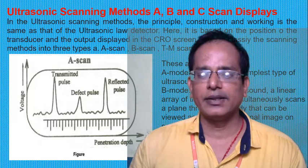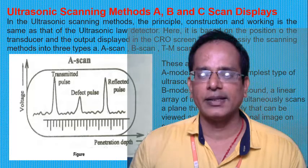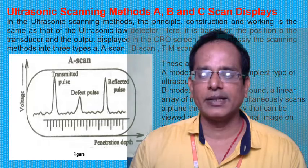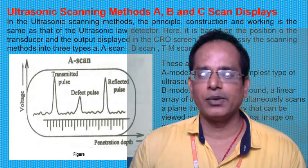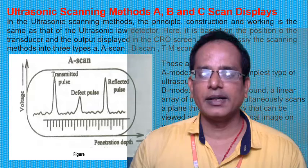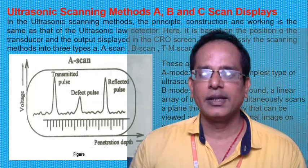B-mode has an array of transducers which simultaneously scan the internal organ as a plane through the body, which can be viewed as two-dimensional images. A-mode provides a signal, B-mode provides images, and M-mode stands for motion images — for example, heart functioning, liver functioning, or viewing a baby inside the uterus — that is the motion display mode.